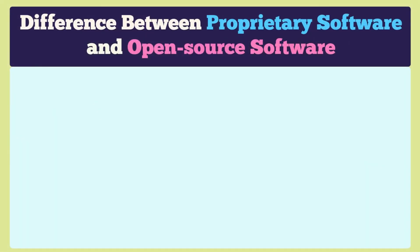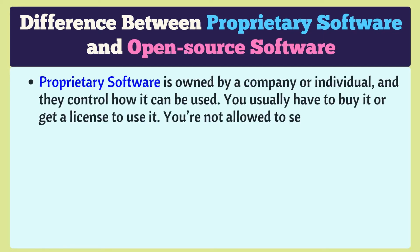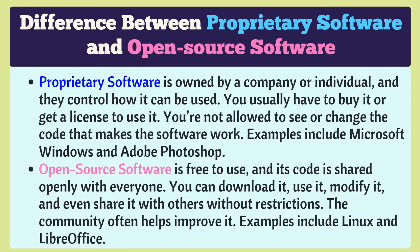What is the difference between proprietary software and open source software? The main difference is in who controls it and how you can use it. Proprietary software is owned by a company or individual, and they control how it can be used. You usually have to buy it or get a license to use it, and you're not allowed to see or change the code. Examples include Microsoft Windows and Adobe Photoshop.